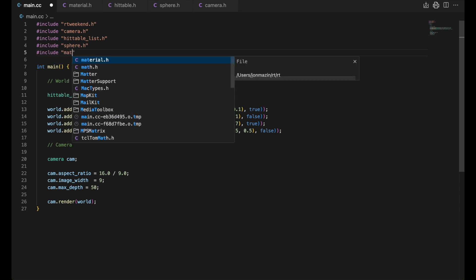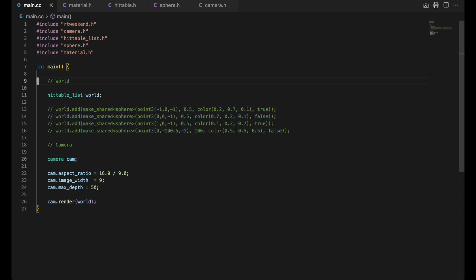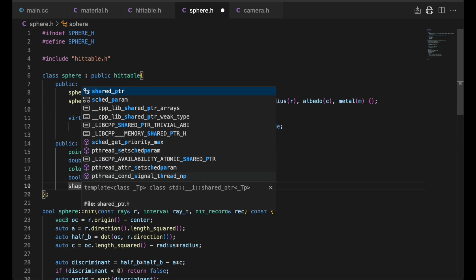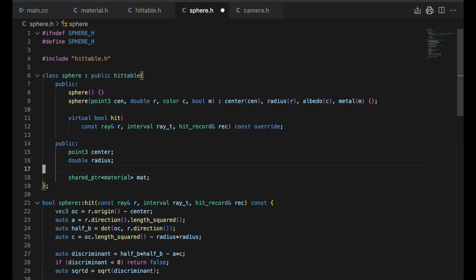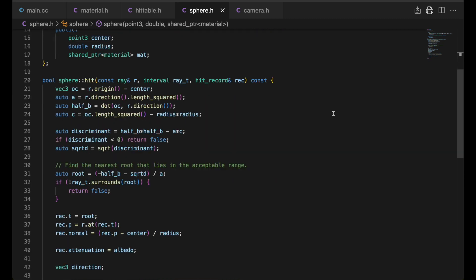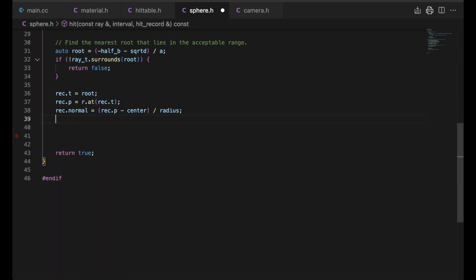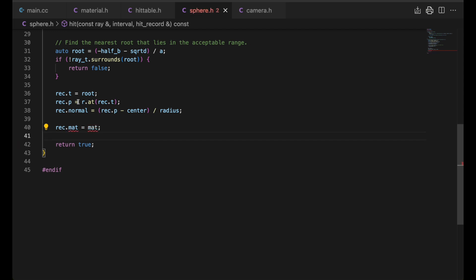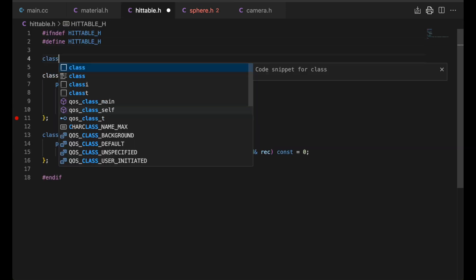So now we'll create some Lambertian materials as smart pointers, with color as their argument. And we'll update the sphere class's constructor to take the material's smart pointer, instead of a color and that boolean for metal or diffuse reflection. We'll simply add the material to the hit record when a hit occurs. The hit record doesn't need to record the attenuation and scattered ray anymore. The material will give us that when we call its scatter method.